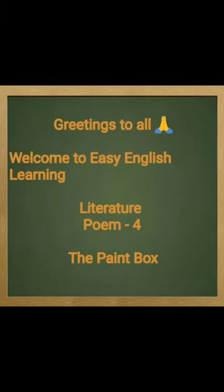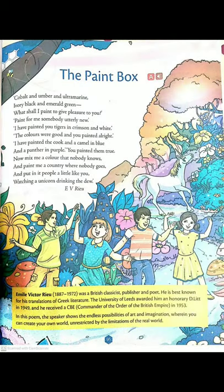Hello everyone, welcome back to my channel Easy English Learning. In today's English class we are going to do the next poem of literature, that is 'The Paint Box.' It is written by E.V. Rieu. He was a British classicist, publisher and poet, best known for his translations of Greek literature. The University of Leeds awarded him an honorary degree in 1949, and he received a CBE — Commander of the Order of the British Empire — in 1953.